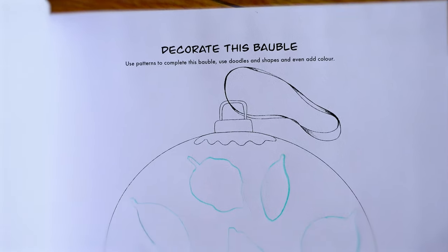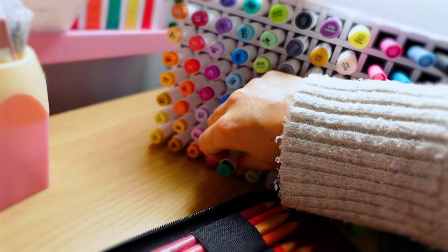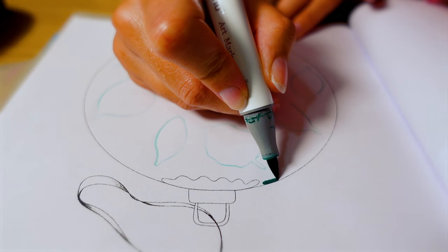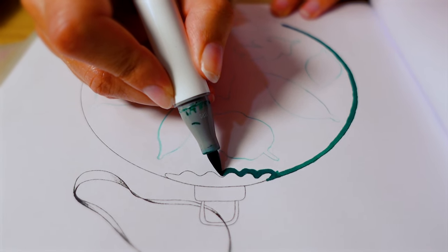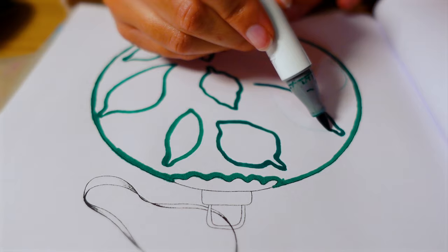We're creating a lot of art using a lot of different mediums and subjects and styles. So I felt it was important to keep the first page nice and simple. A little bit of colour pencil and this page is all done. Let's move on to the second prompt which is decorate this bauble. Use patterns to complete this bauble. Use doodles and shapes and even add colour. Since we're in autumn this is an autumn inspired bauble. Alcohol markers and gold. A lot of fun.